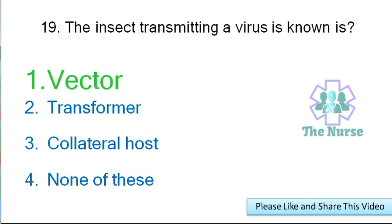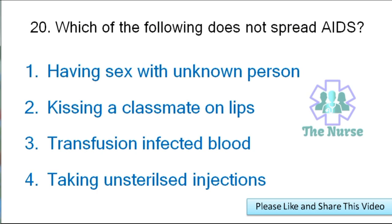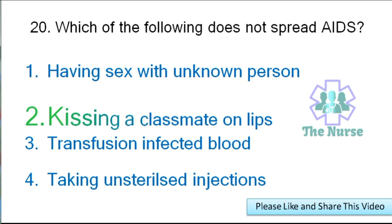Next question: Which of the following does not spread AIDS? — Having sex with an unknown person, kissing a classmate on the lips, transfusion of infected blood, or taking unsterilized injections? Correct answer: kissing a classmate on the lips.